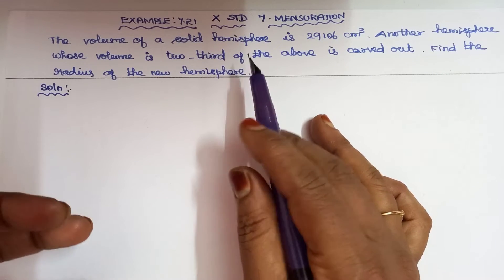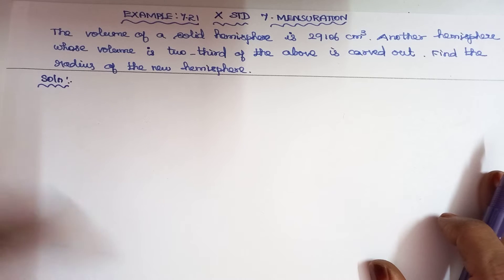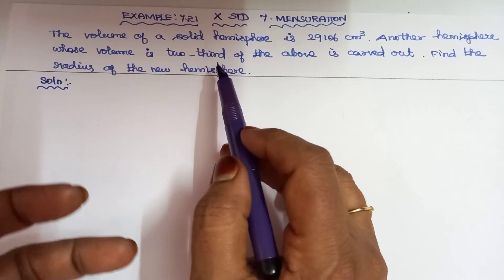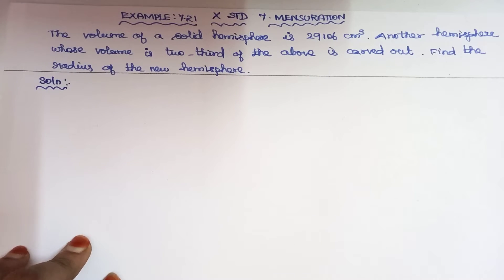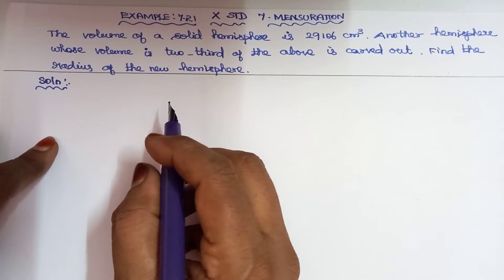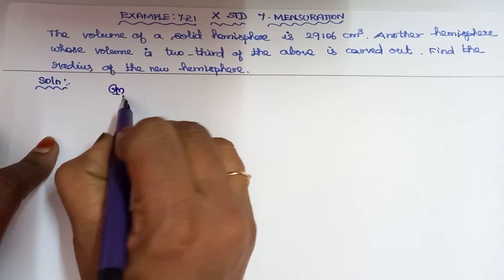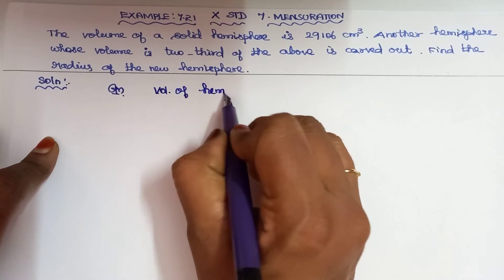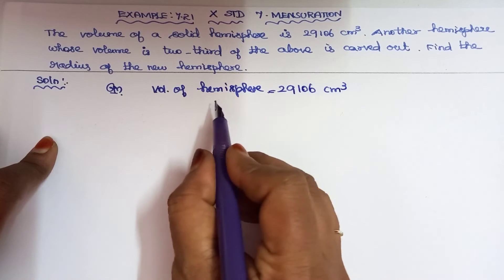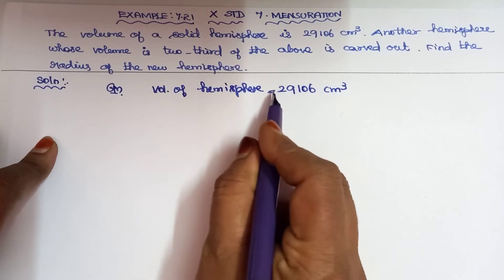We have a solid hemisphere with volume 29106 centimeter cube. From this, a new hemisphere is carved out whose volume is two-thirds of the original hemisphere. We need to find the radius of the new hemisphere. The volume of the original hemisphere is 29106 centimeter cube, and we will find the new hemisphere's volume as two-thirds of this original volume.